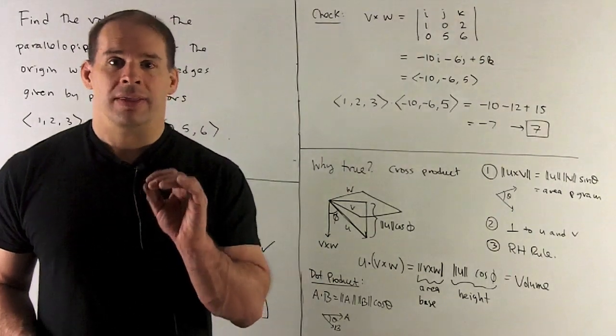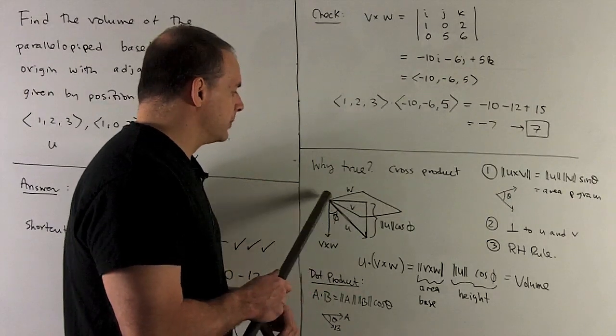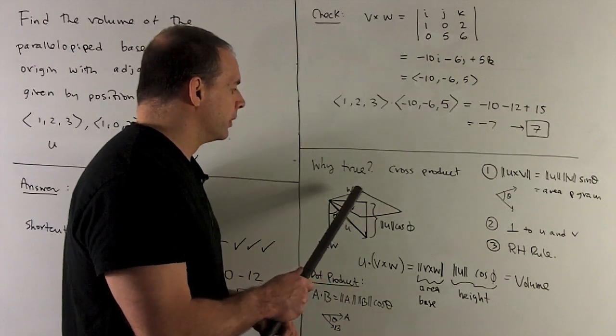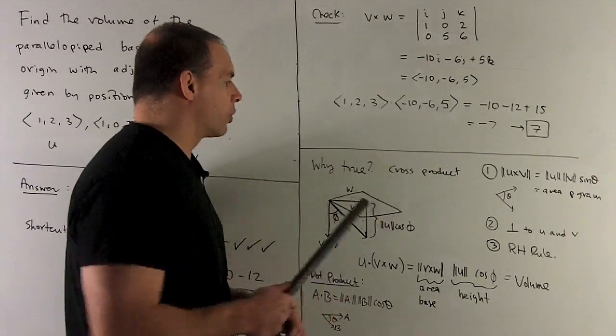okay, you'll see that length of V times the length of W times the sine is just going to be the area of the parallelogram spanned by V and W. Okay, you'll note that is also going to be the base of the parallelepiped if I take it to be spanned by V and W. Okay, so we know the area of the base is given by the length of the cross product.